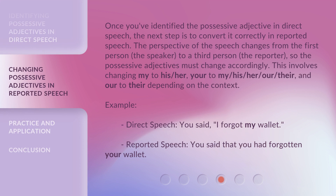Once you've identified the possessive adjective in direct speech, the next step is to convert it correctly in reported speech. The perspective of the speech changes from the first person — the speaker — to a third person — the reporter — so the possessive adjectives must change accordingly. This involves changing 'my' to his or her, 'your' to my, his, her, our, or their, and 'our' to their, depending on the context.